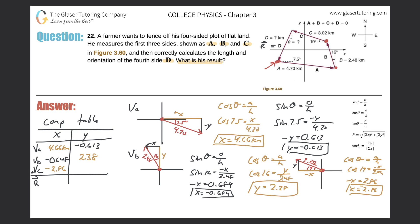Let's do Y's calculation now. I know the hypotenuse, I know this angle, I'm looking for the side opposite that angle. Therefore, I'm going to use sine. Sine of 19 equals Y over 3.02. Sine of 19 times 3.02 gives a value of 0.983. So 0.983 is my Y value. Plug it in — 0.983. A lot of work, but it's very organized and neat.